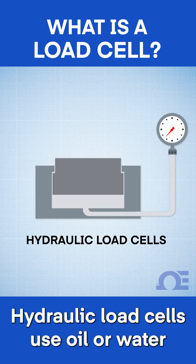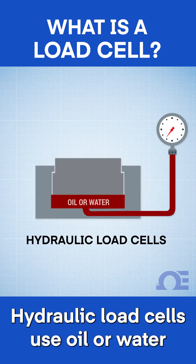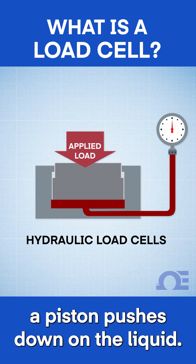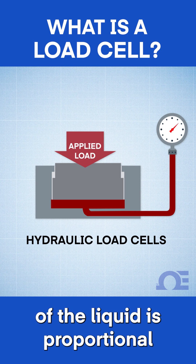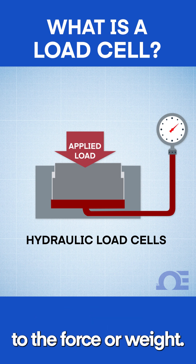Hydraulic load cells use oil or water that, when a load is applied, a piston pushes down on the liquid. The increase in pressure of the liquid is proportional to the force or weight.